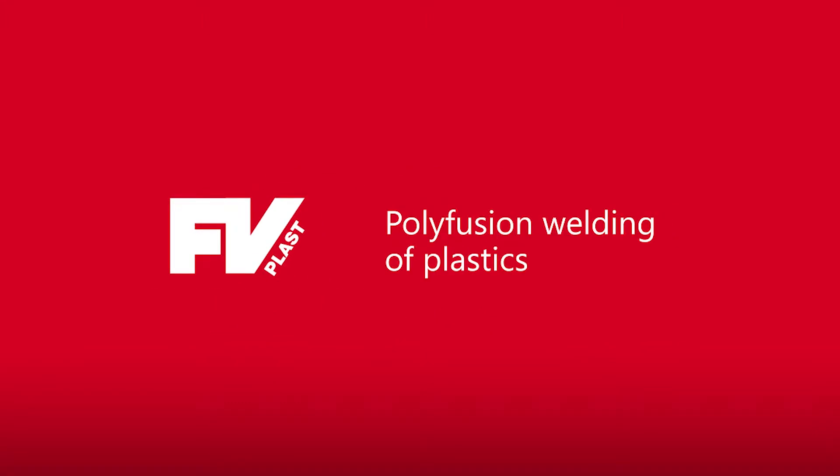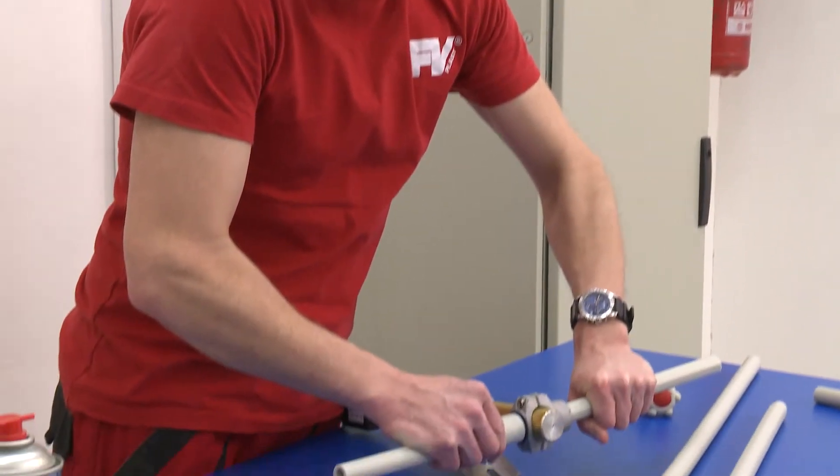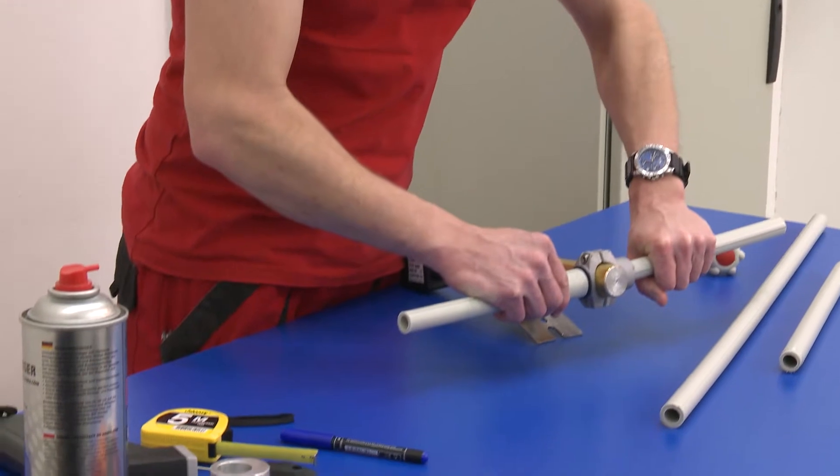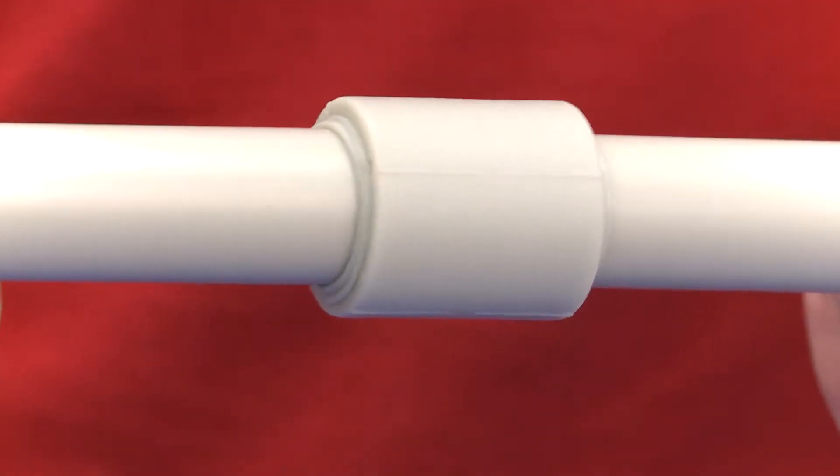Polyfusion welding of plastics is a method of welding and joining plastic systems, creating a homogeneous joint with higher strength than the pipe itself. Now we will show you how to gain that quality of a homogeneous joint.